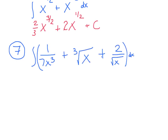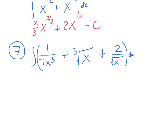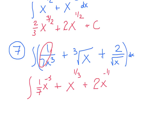Number 7: the integral of 1 over 7x cubed, plus 3 times the cube root of x, plus 2 over the square root of x, dx. Let's rewrite before integrating. That's 1 seventh times x to the negative 3rd, plus x to the 1 third, plus 2x to the negative 1 half, dx.